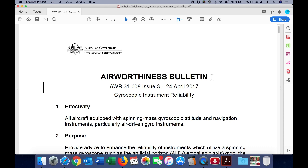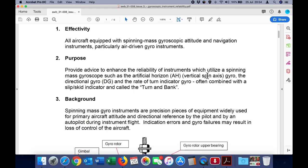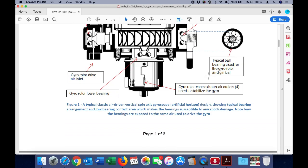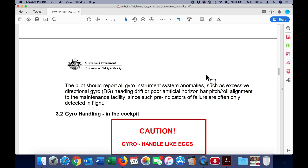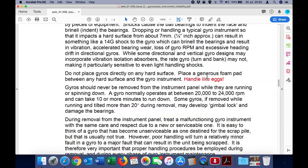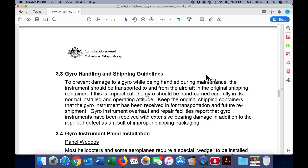It's a PDF document, and it's an airworthiness bulletin talking about gyroscopic instrument reliability. It's a good read. It shows the basic concept of how they work, but very specifically, we're going to go down to paragraph 3.6.